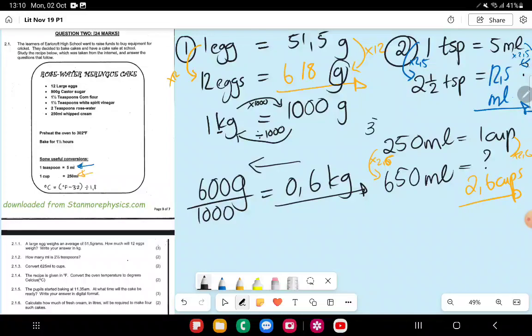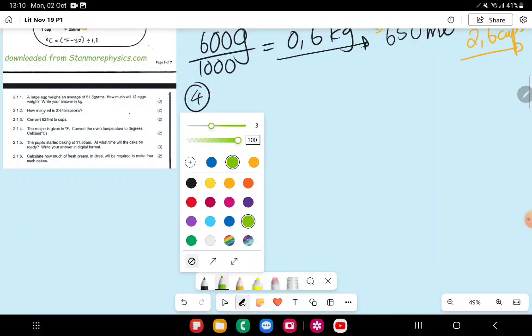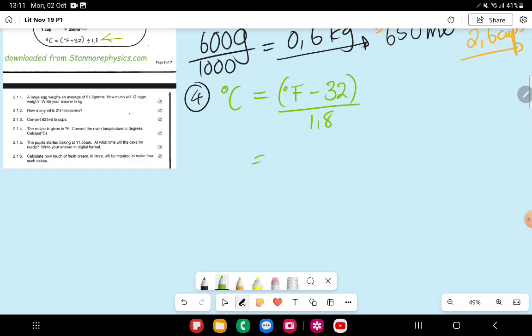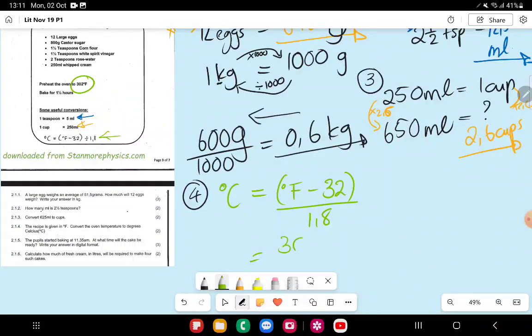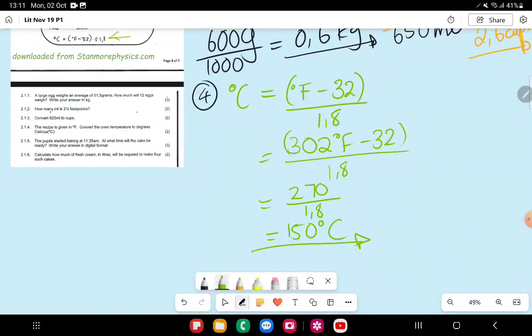Question number four says the recipe is in Fahrenheit, convert to Celsius. Again, I go to my equation here and I write the equation. Degrees Celsius is equal to (degrees Fahrenheit minus 32) divided by 1.8. Now I'm going to substitute my values. I've got Fahrenheit of 302 minus 32, divided by 1.8, which gives me 302 minus 32 is 270 divided by 1.8. So this is totaling 150 degrees Celsius. That's my final answer for four.